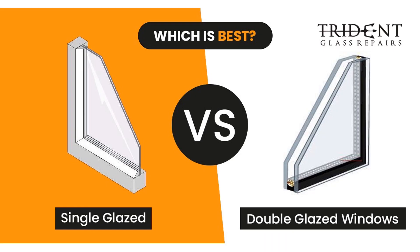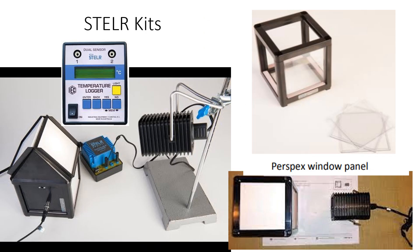Best to test this with an example. My example is to determine whether single or double closed windows are more effective in acting as insulators against the heat transfer from a thermal source. The equipment we use will be these stellar kits where students in class time can construct these mini virtual houses, shine a thermal lamp on it, and log the change in temperature on these data loggers.